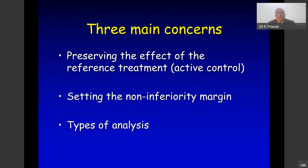There are three main concerns with non-inferiority trials. First: is the effect of the reference treatment (active control) preserved? Like the elder sister not boxing at full effort, or the antibiotic losing efficacy against resistant organisms. Second: how do we set the non-inferiority margin — you can set it smaller, a little bigger, or even bigger. Third: the types of analysis, which we will come to later.